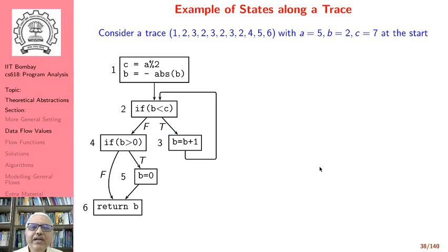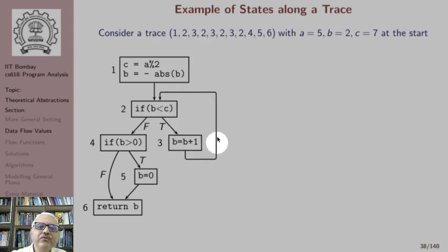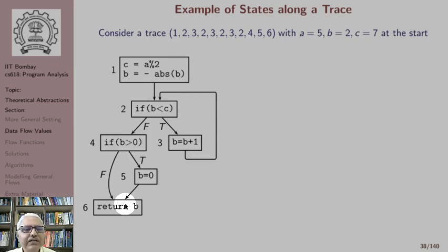Let us look at an example of states along a trace along a particular execution path. We have a control flow graph here and we will talk about a path 1, 2, and then 3, 2 — which is one traversal of the loop — again 3, 2 for the second traversal, again 3, 2 for the third traversal. After the third traversal of the loop, control flows to 4, then to 5, then to 6. We assume some values at the start of the path.